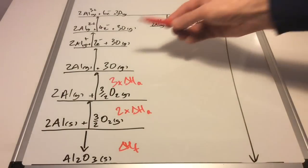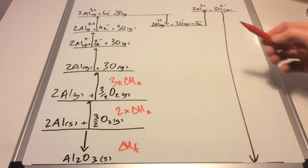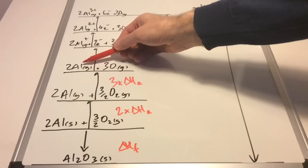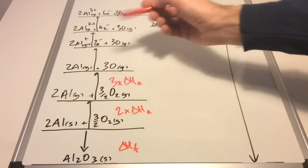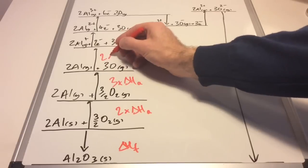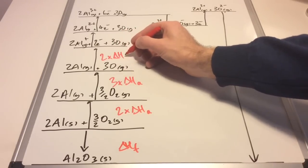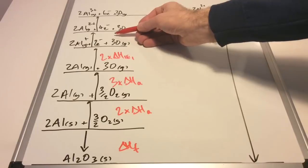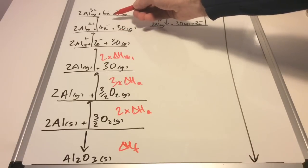We've now got the three ionization energies for aluminium. Remember in the cycle we have two moles of aluminium, and so therefore this would be two times the first ionization energy, two times the second, and two times the third.